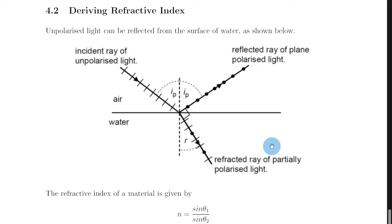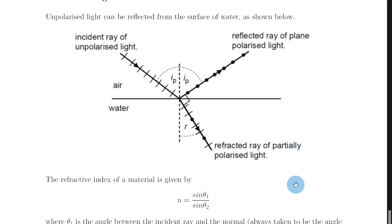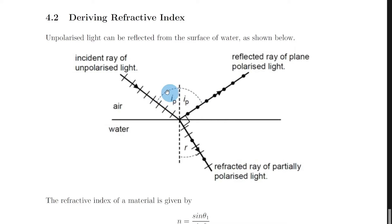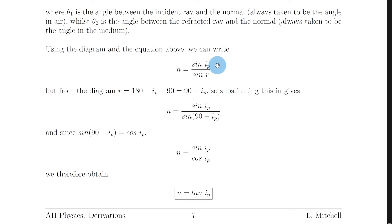So here we have n equals sine theta 1 over sine theta 2, where theta 1 is always going to be the angle in air, which is our angle of incidence — that's ip between the incident ray and the normal. And theta 2 is the angle of refraction, between the normal and the refracted ray. So using the diagram and the equation, we can write that n is equal to sine of ip divided by sine of r, because theta 1 equals ip and theta 2 equals r, the angle in the denser medium which is water.